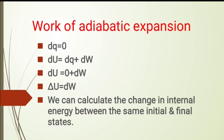The last type of work is the work of adiabatic expansion. For an adiabatic process, the change in heat is zero, so dQ = 0. From the first law of thermodynamics, dU = dQ + dW. Since dQ = 0, we get dU = dW. This means the change in internal energy equals the work done, and from this equation we can calculate the change in internal energy between the same initial and final states.